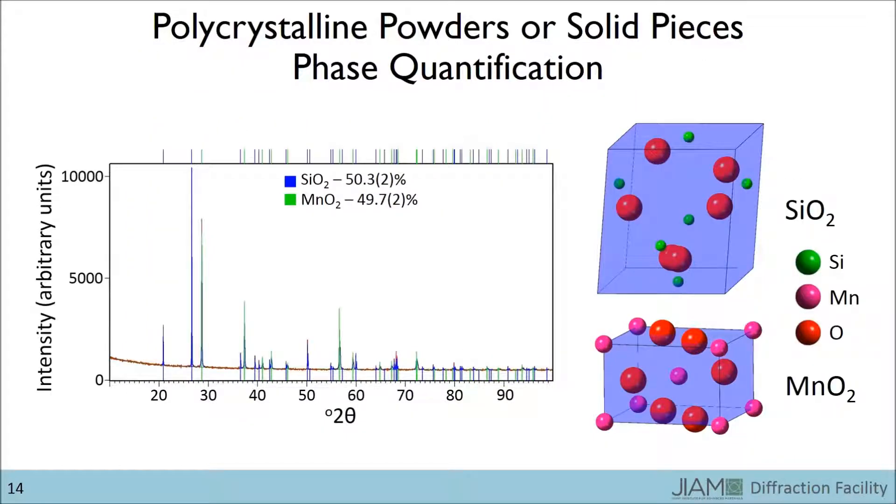The previous slide covered the case in which the material was a single phase. Many times, however, users come to the lab with samples composed of multiple phases. Shown here is the diffraction pattern for the sample containing both silicon oxide and manganese oxide that I showed you earlier. If you look at the unit cells on the right of the screen, you can see that the shapes are very different. Because of this, each phase has a distinct diffraction pattern.